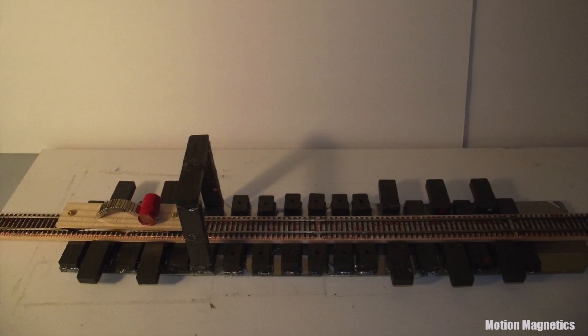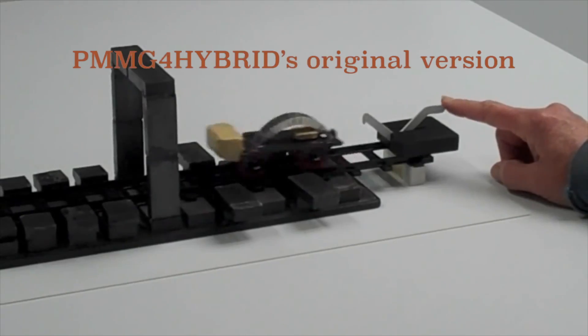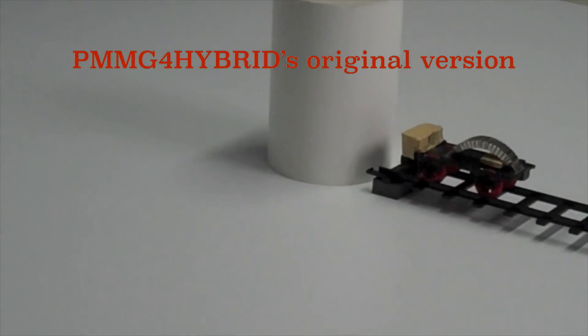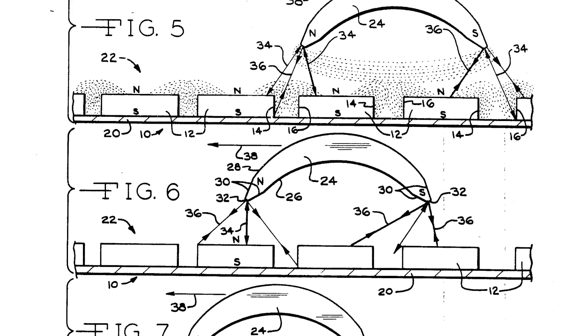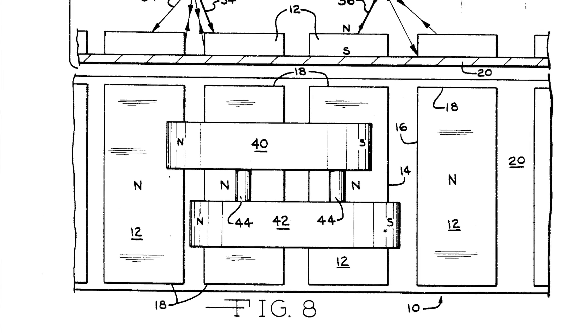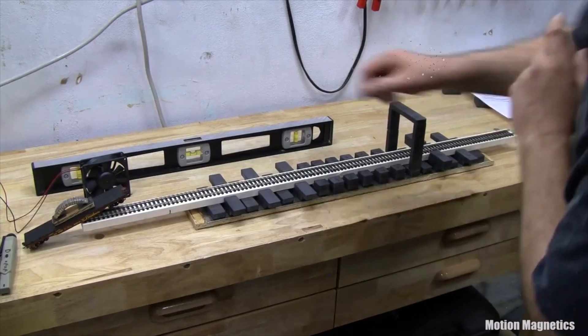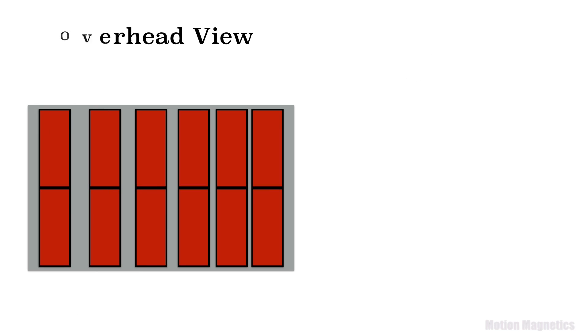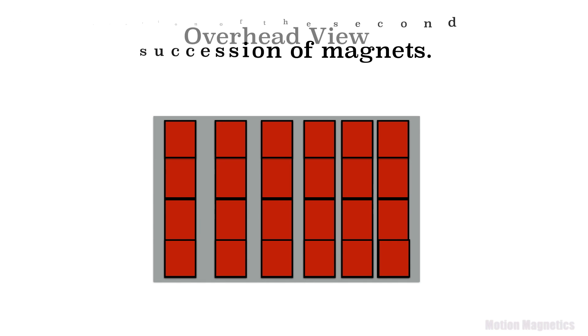In case you missed out on part one, I demonstrated my replication of PMM G4 Hybrid's version of Howard Johnson's linear magnetic motor patent from 1979. I also pointed out that Scorch GD has already done a replication of this, and I went through some of the basics of how this thing is constructed and put together. That said, let's move on.